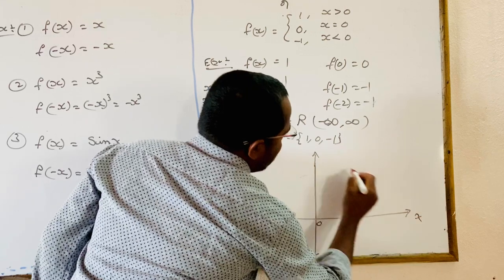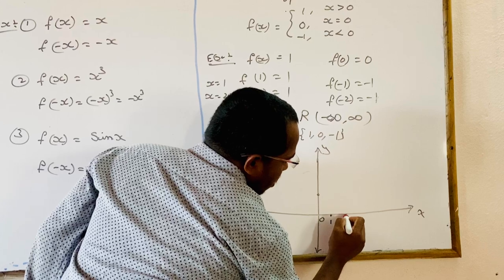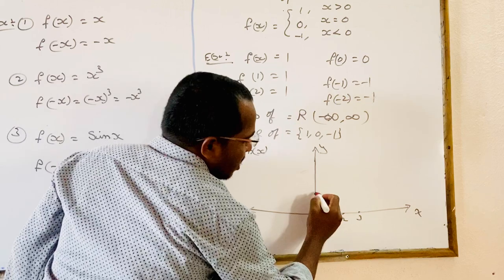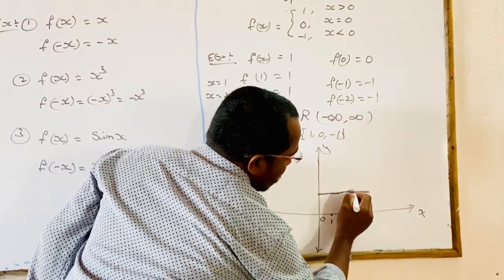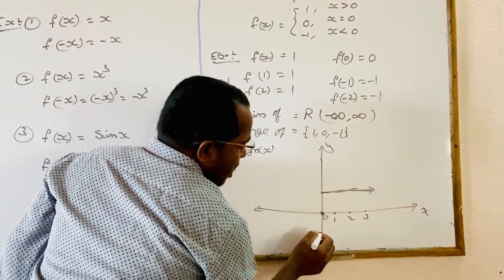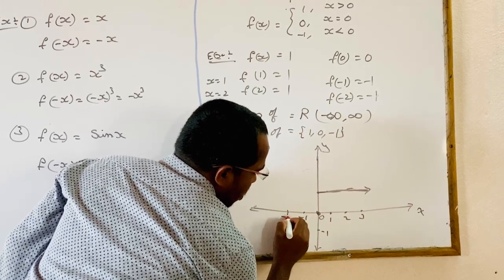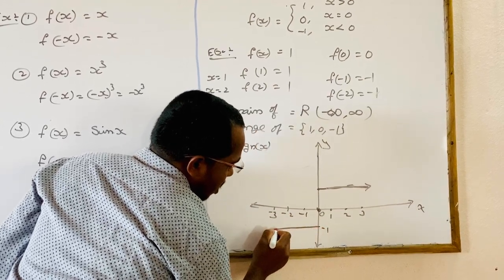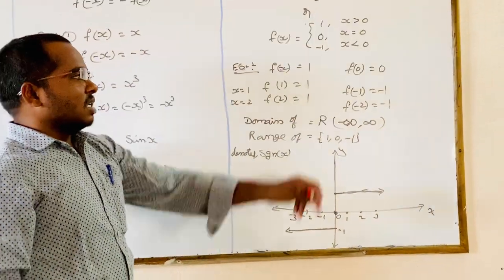We draw the x-axis and y-axis for the signum function graph. Any positive number substituted gives 1, so the graph is a horizontal line at y equals 1 for positive x. At x equals 0, we get the point at origin. For any negative value substituted, we get minus 1, so the graph is a horizontal line at y equals minus 1. This is the graph of the signum function.